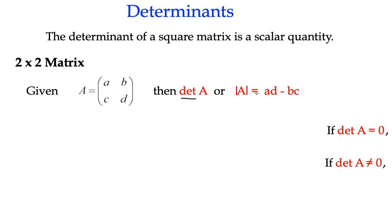And it's calculated by multiplying the elements of the principal diagonal, A times D, and subtracting from that the product of the secondary diagonal here, B times C.